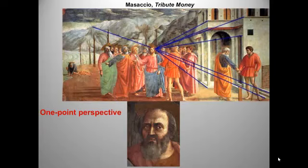The Tribute Money is one of the earliest paintings to employ mathematical perspective. Masaccio was a close friend of Brunelleschi's and knew his studies of perspective very well. Note how the orthogonals converge on Christ's head at the horizon line. Masaccio also made far more use of contrasts of light and dark to define volume and space.